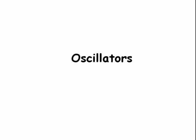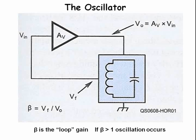An oscillator is simply an amplifier gone bad — that is, with too much loop gain. The output voltage V_O is the input voltage V_N times the amplifier gain A_V. Some of the output voltage is fed back to the input; the loop gain beta equals V_F divided by V_O. If beta is a positive number, the circuit will oscillate.